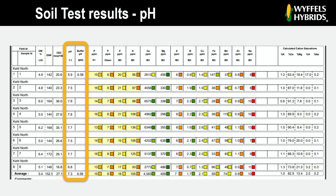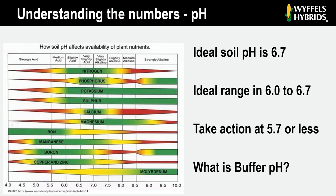The actual purpose of the buffer pH number is used to write liming recommendations. For you guys as growers, unless you are writing your own lime recommendations, it's really something you don't have to pay too much attention to. Focus more on the actual soil pH for your operation or your field.